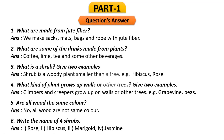Next we will go to the question and answer section. Question 1: What are made from jute fiber? We make sacks, mats, bags, and rope with jute fiber. Question 2: What are some of the drinks made from plants? The answer is coffee, lime, tea, and other beverages. We get coffee, lime, and tea from plants — they are all beverages obtained from plants.